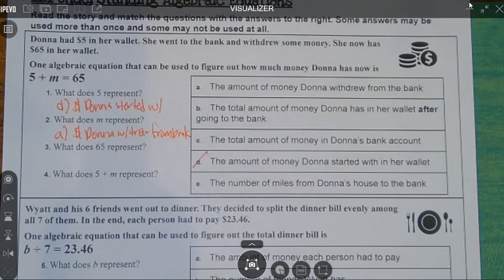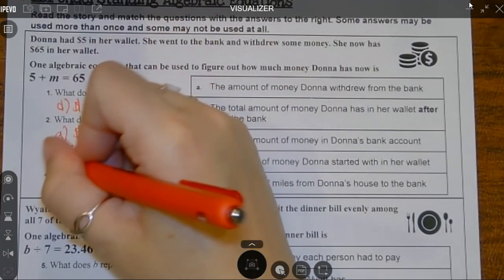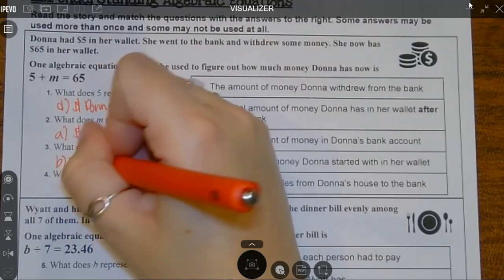What does 65 represent? The 65 is not the money she withdrew, it's the total amount of money she has in her wallet after going to the bank. Yes. So total money.